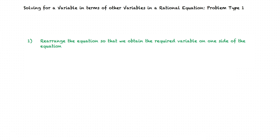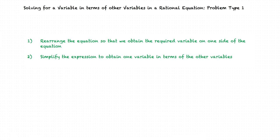I think I understand the concept. In order to solve for a variable in terms of other variables in a rational equation, we first rearrange the equation so that we have the required variable on one side. Finally, we simplify the expression to obtain the required variable in terms of the other variables.